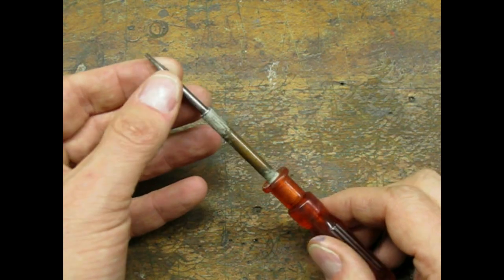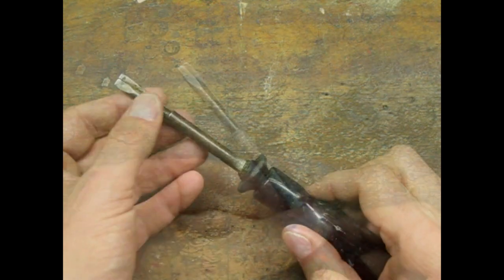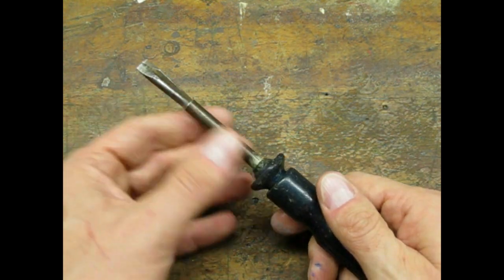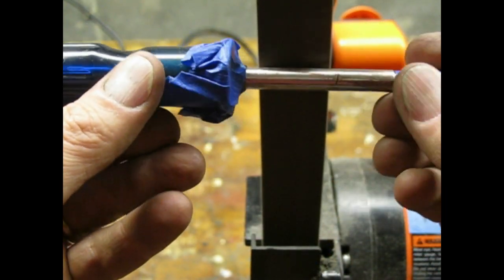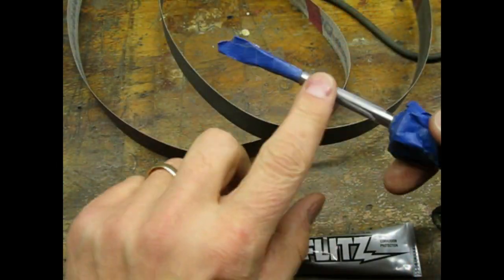I struggled with what to do about the shafts on both screwdrivers. They had what appeared to be copper plating over steel. So I decided to sand down to the steel and polish with Flitz.